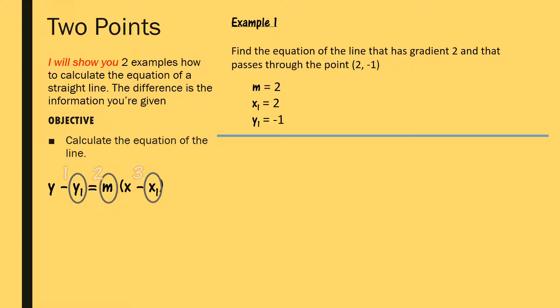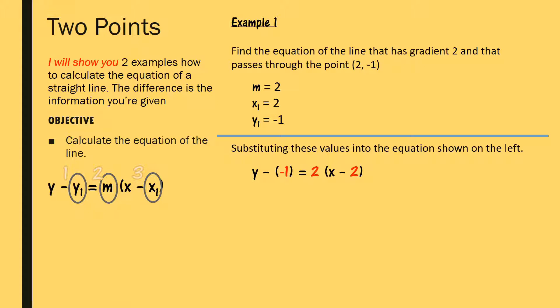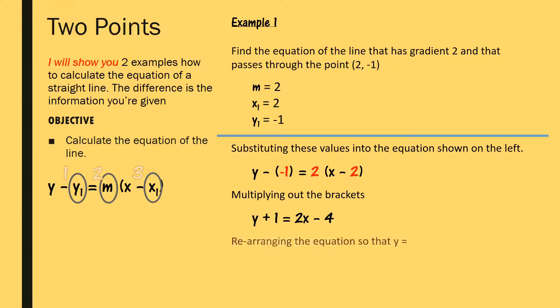Substituting into the equation: y minus y1 (which is minus 1) equals m (which is 2) times (x minus x1, which is 2). Expanding the brackets: y minus minus 1 gives y plus 1, and 2 times (x minus 2) gives 2x minus 4. Rearranging so that y equals everything else, we move the plus 1 over to get minus 1, and tidying up gives y equals 2x minus 5. That is the equation of the line with gradient 2 passing through the point (2, -1).